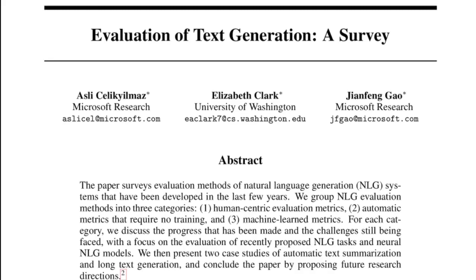If you've watched any of my previous content and gained some value, I'd encourage you to hit that subscribe button and share it. The paper surveys evaluation methods of NLG systems developed in the last few years. In this video I'll be covering human-centric evaluation metrics. The next video will cover automatic metrics that don't require training data — such as ROUGE, BLEU, METEOR, F-score — and the last video will cover machine learning metrics, where we train a system to evaluate NLG systems. One such metric I've already reviewed is called BLEURT; I've made a video on that which I'll link in the description.